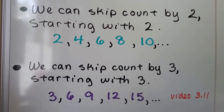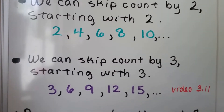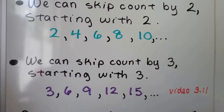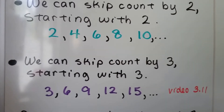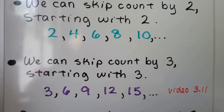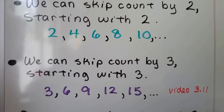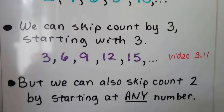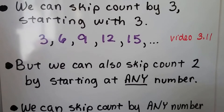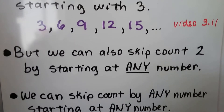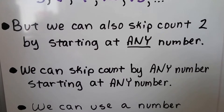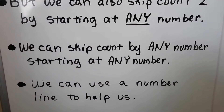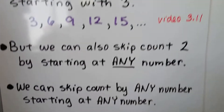We can also skip count by three starting with three: three, six, nine, twelve, fifteen. We talked about this in video 3.11 — there's a link to that video in the description if you missed it. But we can also skip count by two starting at any number. In fact, we can skip count by any number starting at any number. We can use a number line to help us.